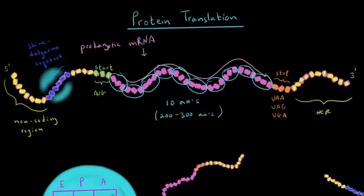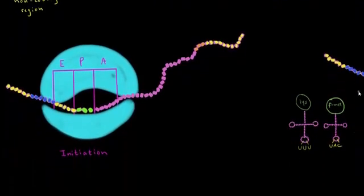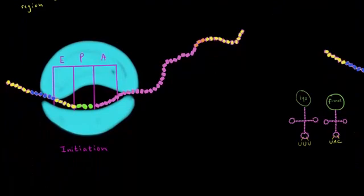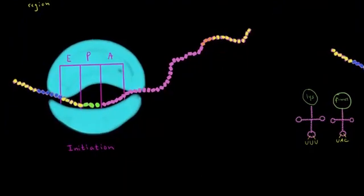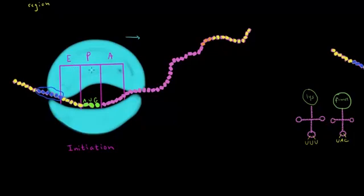So let's begin translating. The first step is initiation. What happens during initiation is the ribosome recognizes the Shine-Dalgarno sequence and binds to the mRNA, then it moves to the right, scanning the mRNA, until it hits the start codon AUG. You can see these boxes represent three basic sites on the ribosome: the E site, the P site, and the A site.